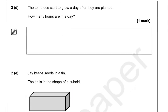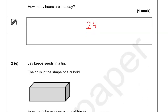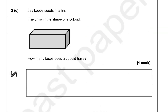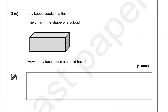The tomatoes start to grow a day after they are planted. How many hours are in a day? In a day there are 24 hours — this is something we should know. Jay keeps seeds in a tin, and the tin is in the shape of a cuboid.